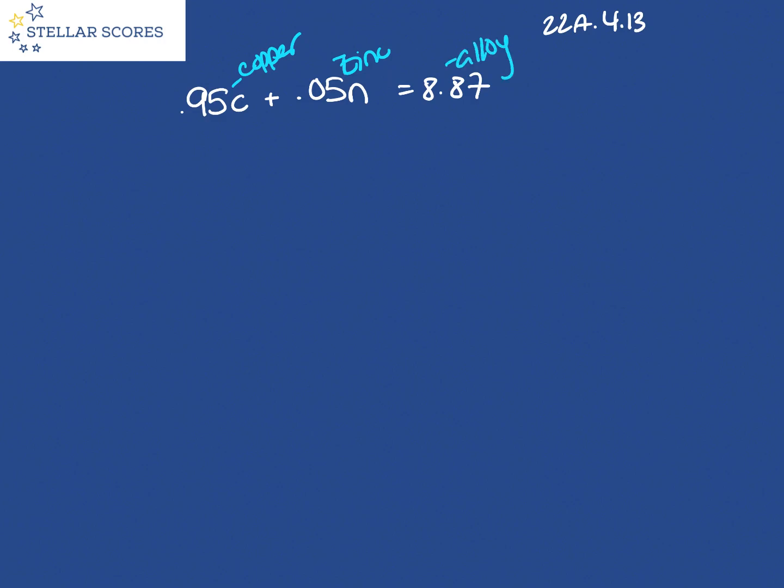Okay, now what is the question? They want to know what is the density of zinc, what is N, when the density of copper, when C equals 8.96. Okay, I can do that. That's a pretty straightforward algebra problem, right?